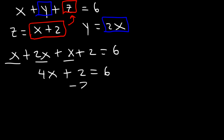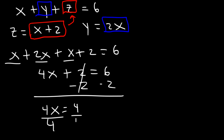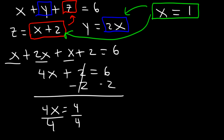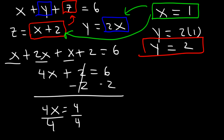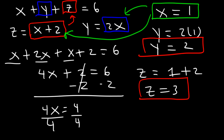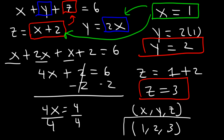So 4x plus 2 is equal to 6. If we subtract both sides by 2, we get 4x equals 4. Dividing both sides by 4 gives x equals 1. Now once we have x, we can plug it into the other two equations. y is 2 times 1, so y is 2. And z is x plus 2, or 1 plus 2, so z is 3. We can write the solution as x comma y comma z: it's 1 comma 2 comma 3.